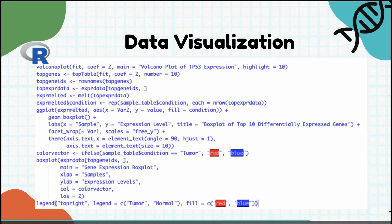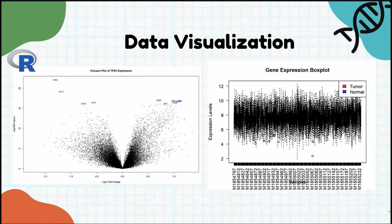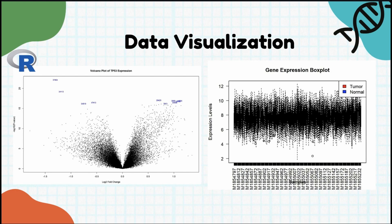After running the analysis and visualizing the results, we'll interpret the significance of our findings. The key question is: is TP53 expression significantly different between cancerous and normal tissues, and what does this tell us about its role in lung cancer? So, first we have a gene expression box plot.